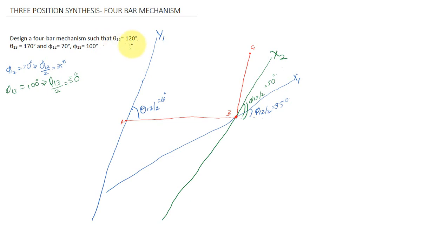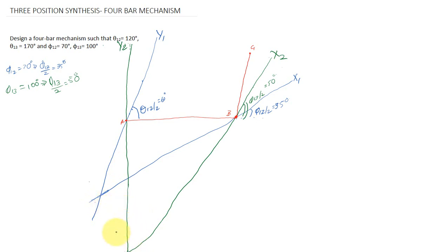Now I am extending these lines. Lines y1 and x1 will meet at point P1, which is the first pole, and lines x2 and y2 will meet at point P2. So this is your P2.